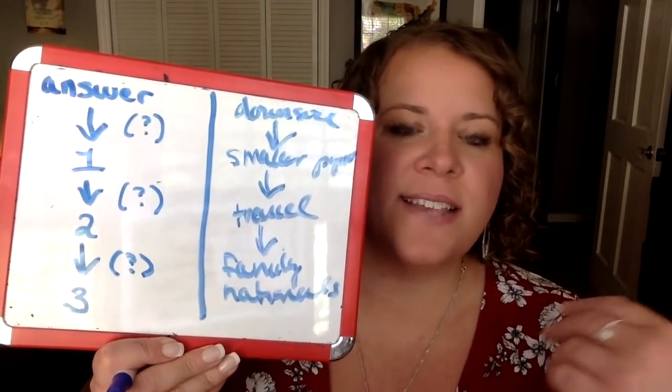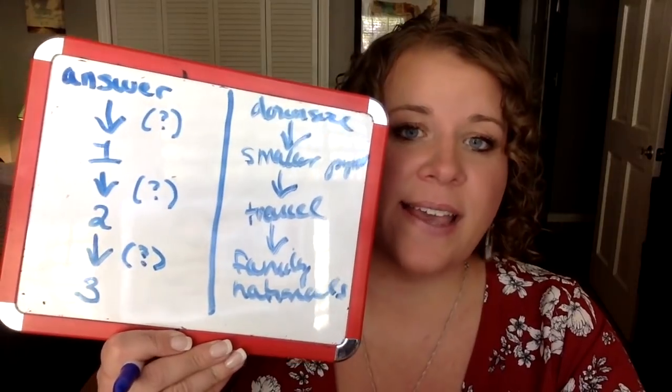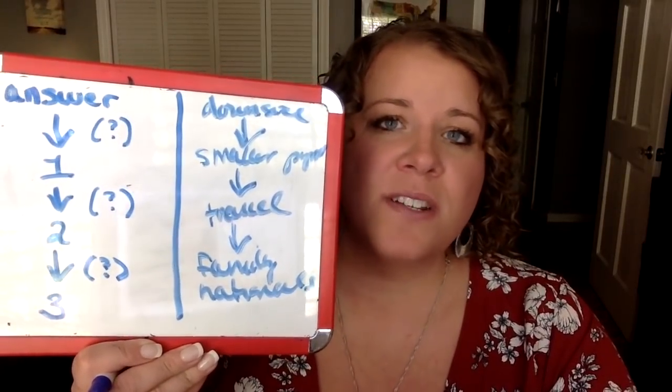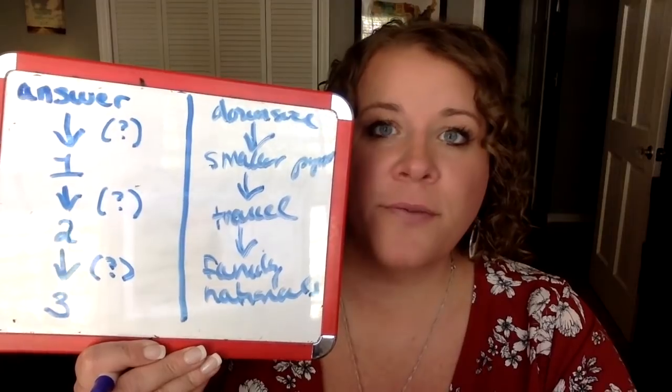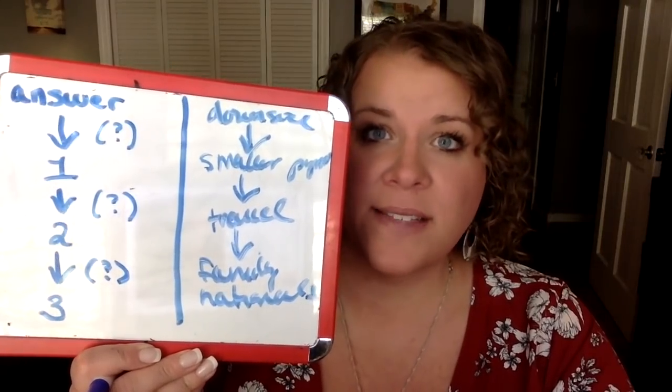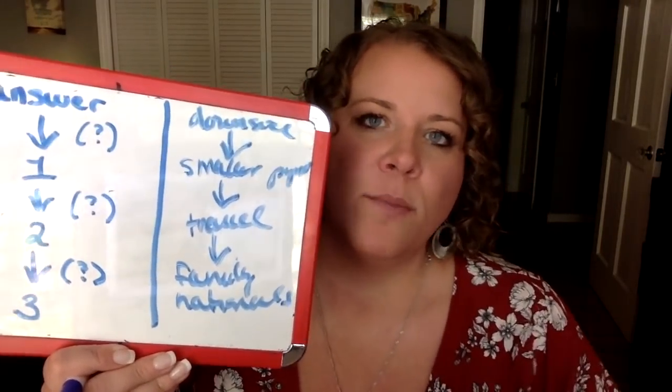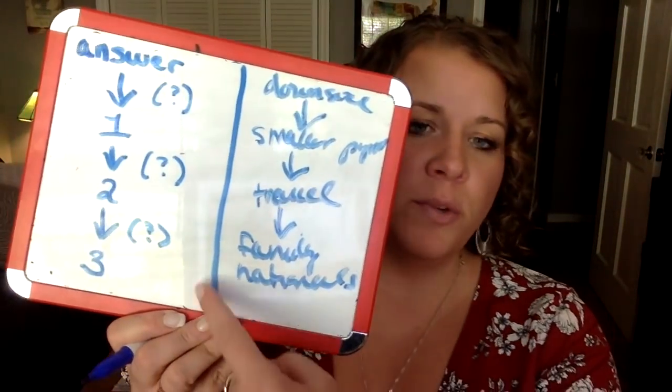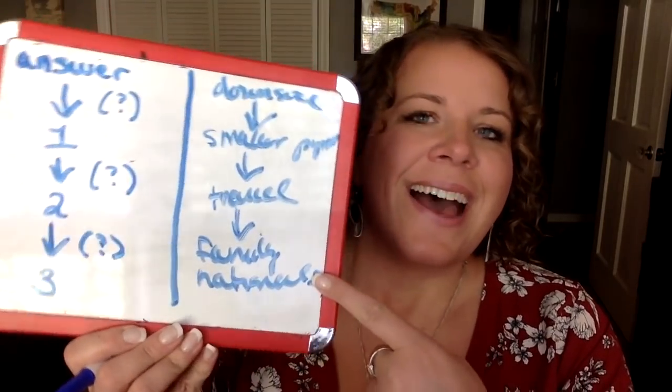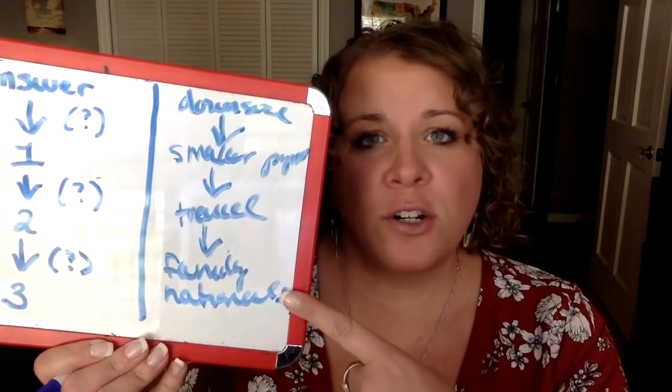I can either summarize or keep going. To summarize: it sounds like you want to downsize, and the purpose is a smaller monthly payment so that you can travel and visit your family as well as national parks. Is that correct? Then you can move on and ask, is there anything else? If you wanted to keep going, you'd say, what is it about traveling to see your family and national parks that's important to you? You can do more than three digging questions — you just don't want to do less than three. Three is the magic number.